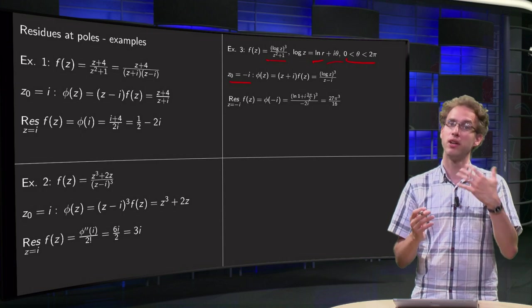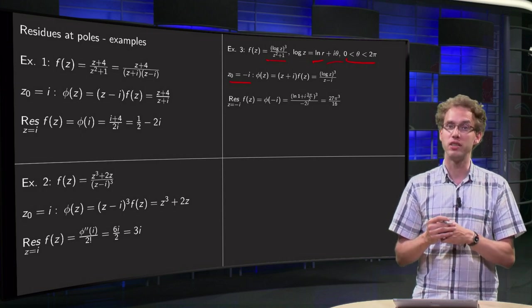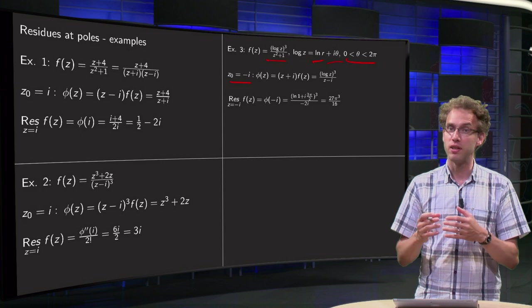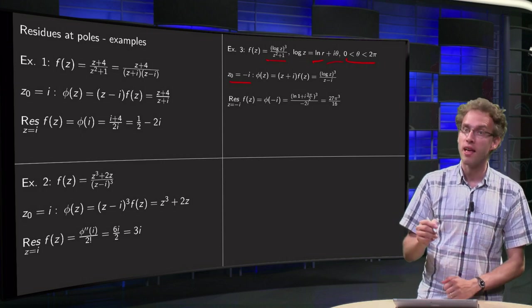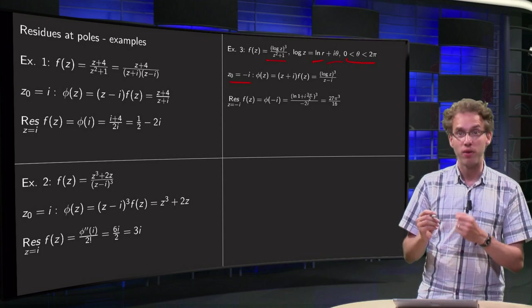After this example, you can compute the residue at z zero equals plus i. Just discuss below what the answer should be. We will do the minus i.